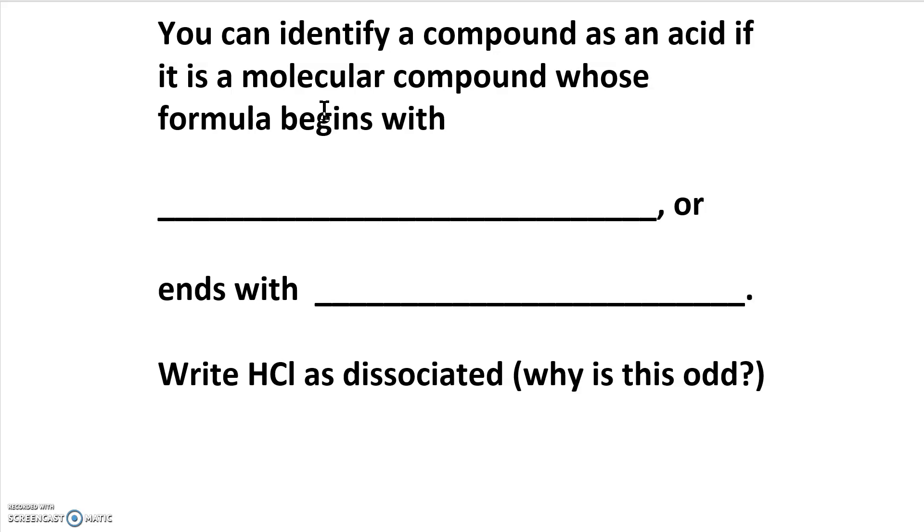You can identify a compound as an acid if it is a molecular compound whose formula begins with hydrogen or ends with our old friend carboxyl COOH.